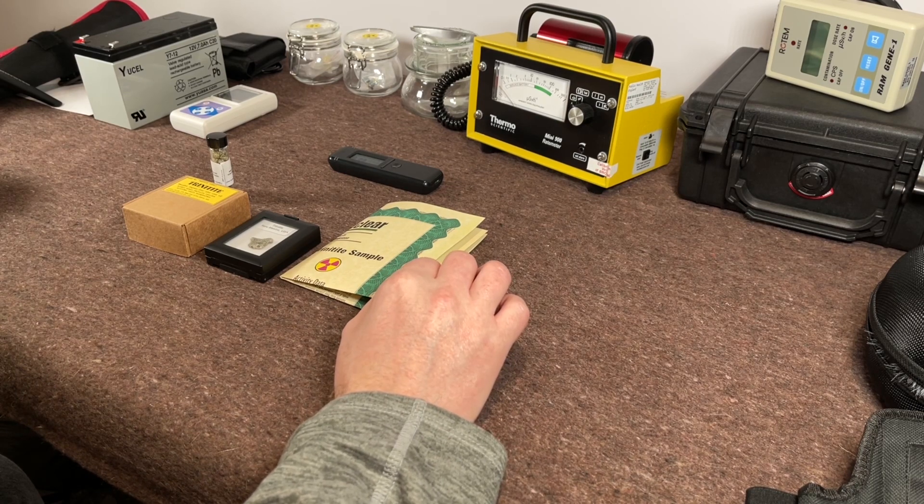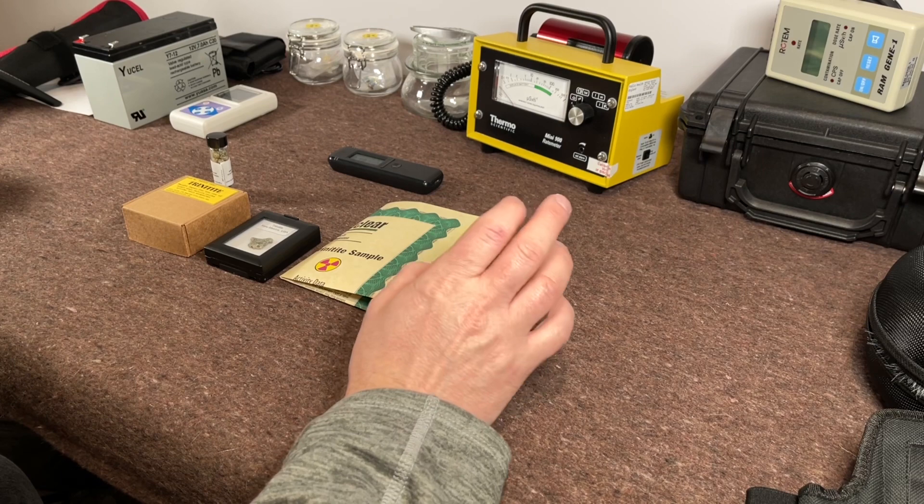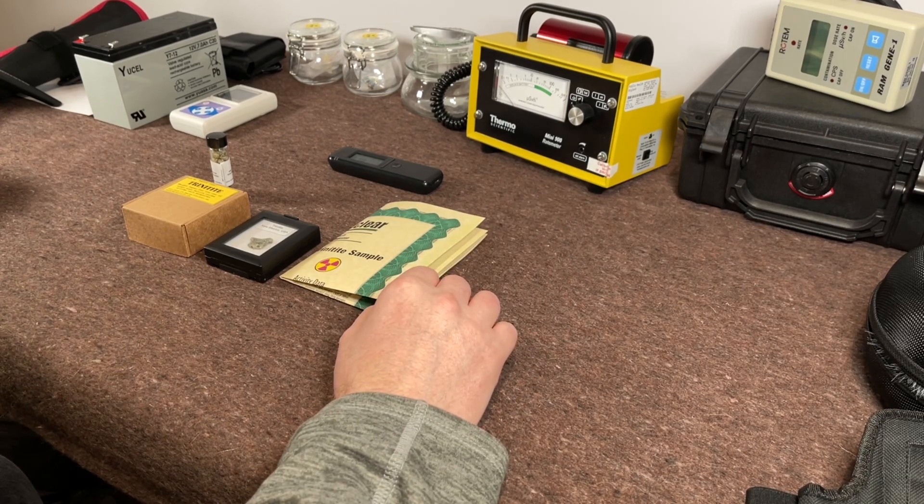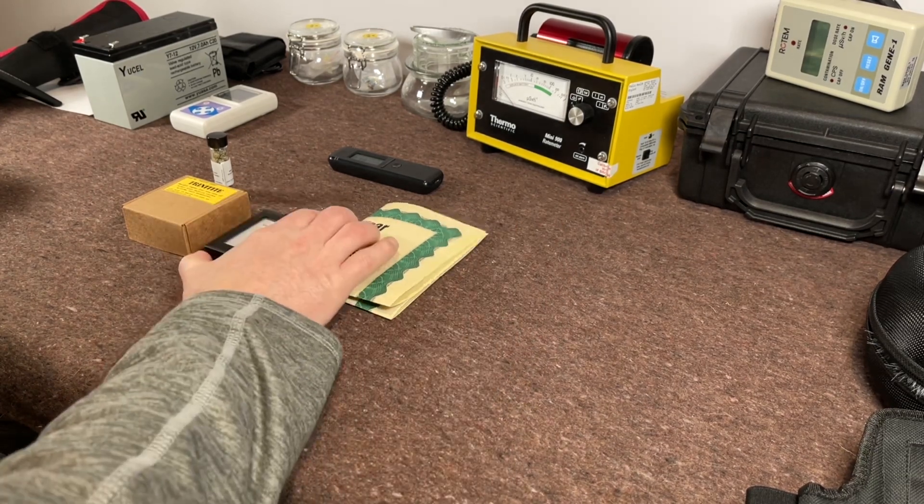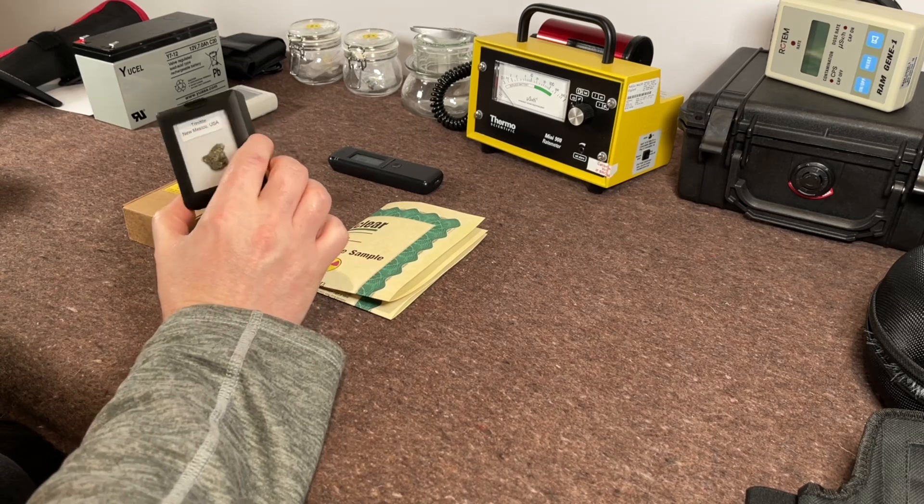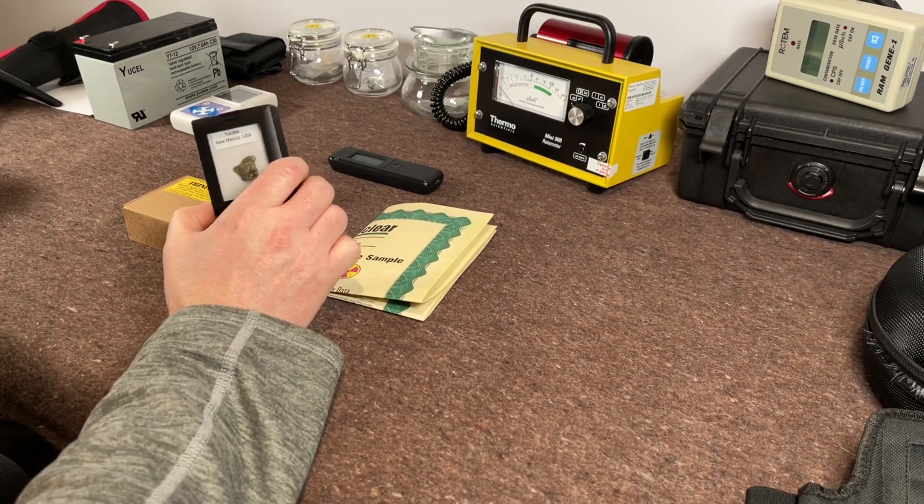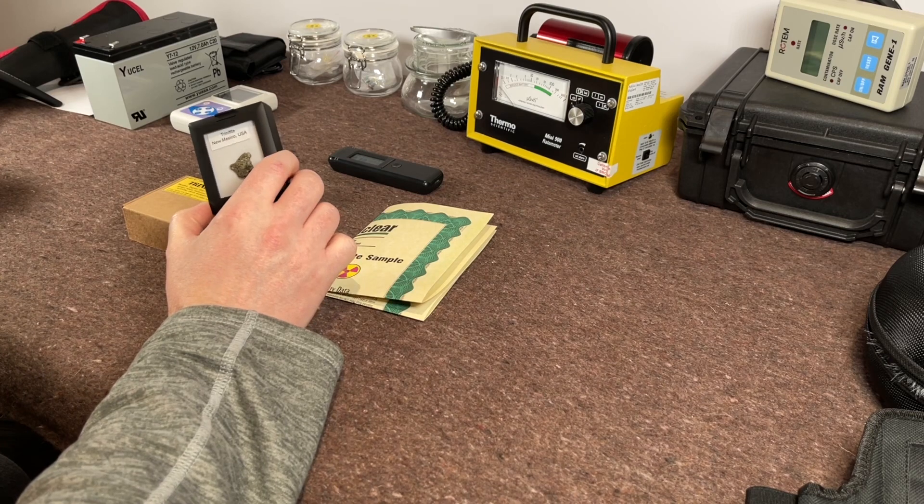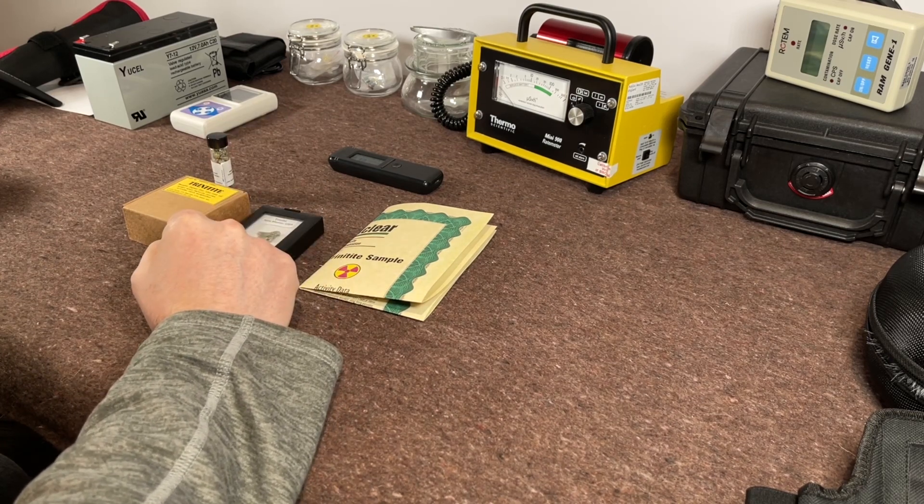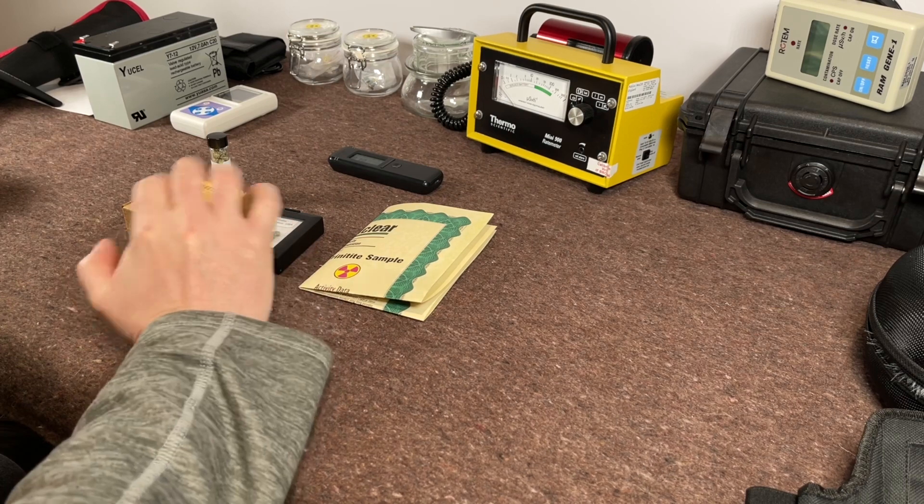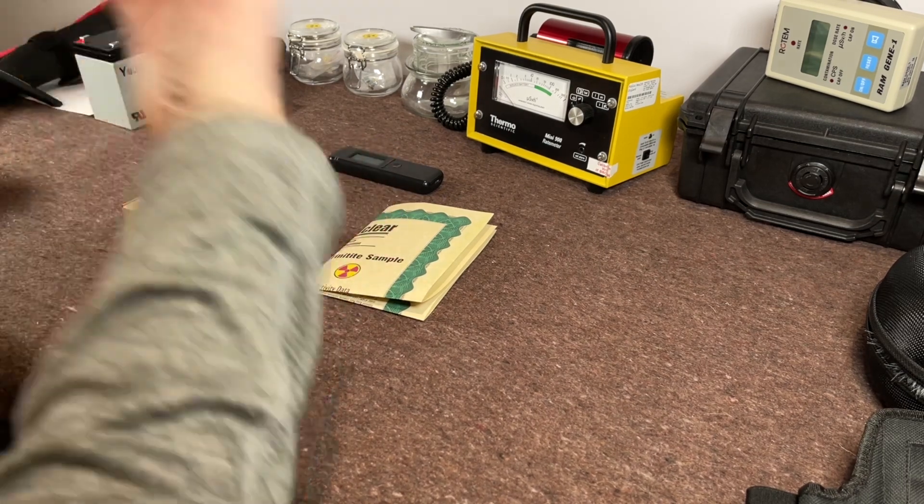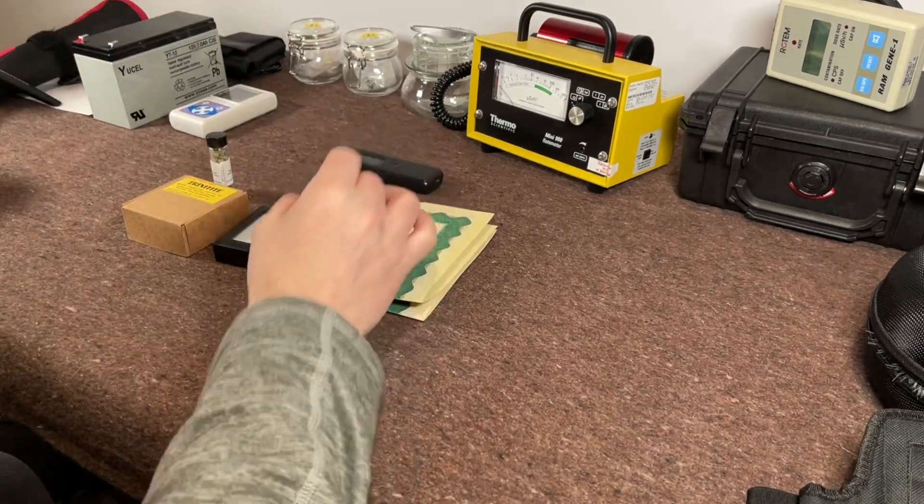Today we're going to be talking about not only the Trinity experiment but its by-product, Trinitite. It is essentially melted and irradiated sand and other little bits of rock. It's something that I've been interested in for quite a while. Obviously it has a radioactive element so that's why I'm interested in it.